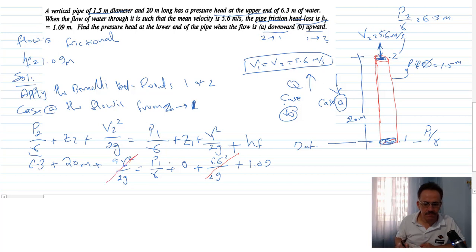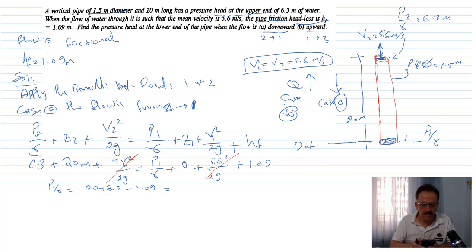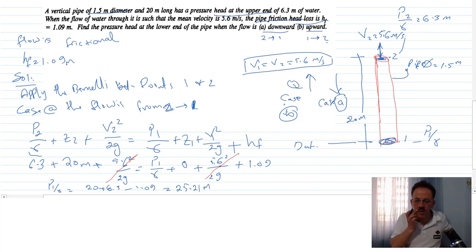The velocity head terms cancel, and we get p1 over gamma equals 20 plus 6.3 minus 1.09, which equals 25.21 meters.